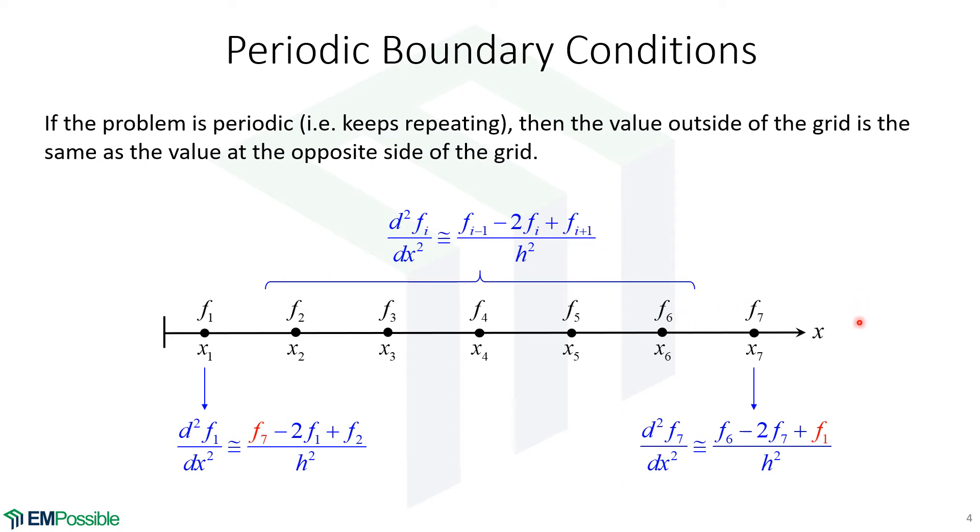And so if it is periodic, we would typically simulate one repetition of that periodic function. And so if we need a value from outside the grid, we would just grab the value from the other side of the grid. So we use our typical finite difference approximation at the edge of the grid. But where we would need the F zero, we're going to reach to the other side of the grid and drop an F seven in here. Likewise, we're using our standard second order finite difference approximation and where we would need an F eight from outside the grid, we will reach to the other side and drop an F one in that place. Now we have forced that function to be periodic.